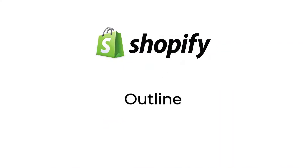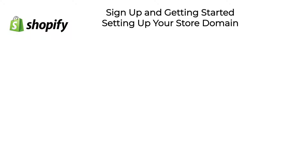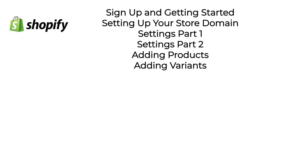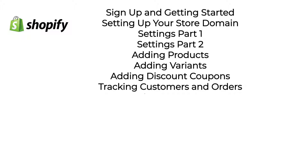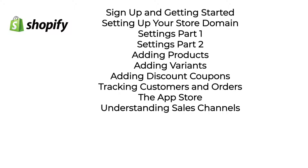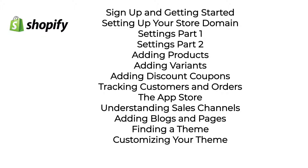So where are we going in this course? We'll start by getting signed up, then set up our dot store domain. We'll go through all of the settings — general, payment, checkout, shipping, taxes, notifications, files, and sales channels. We'll add some products and talk about variants, discount coupons, tracking customers and orders, and the App Store. I'll spend an entire section on sales channels, because Shopify isn't just an online store — it can manage brick-and-mortar sales too. We'll also cover adding blogs and pages, finding and customizing a theme for your store.